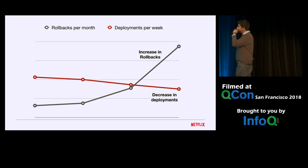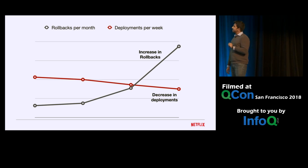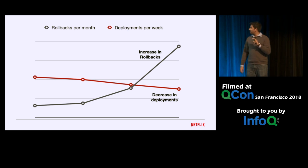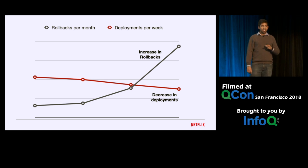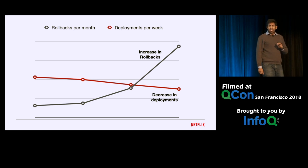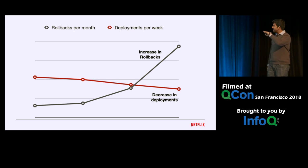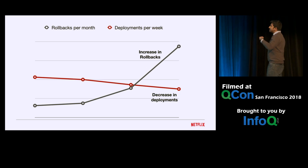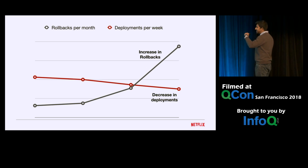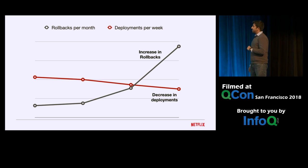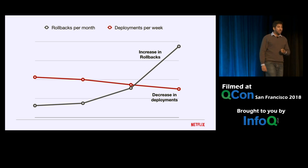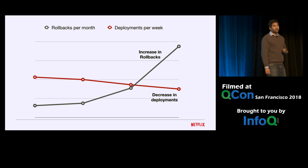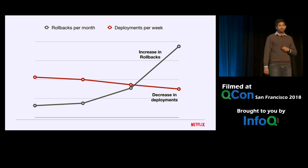Separately, we have plotted two metrics: deployments per week and rollbacks per month. As you can see, over the years we are seeing a decreasing trend in deployments and an alarming increase in the number of rollbacks, due to the complexity of our API service.